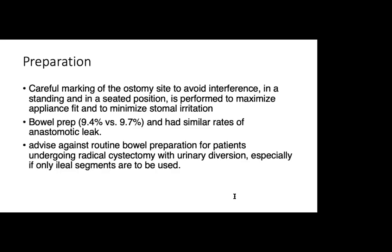We'll start with radical cystectomy. Usually if your patient is diagnosed as T2 to T3, or stage 2 to 4, the gold standard is radical cystectomy with radical lymph node dissection. For our preparation, usually a careful marking before you start — careful marking of the ostomy site to avoid interference. In a standing and seated position, it is performed to maximize appliance fit and to minimize stomal irritation.